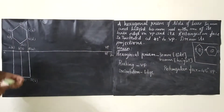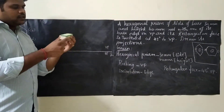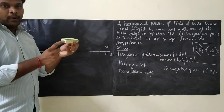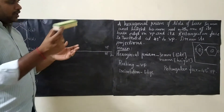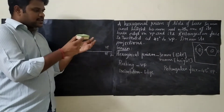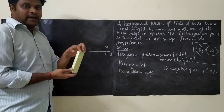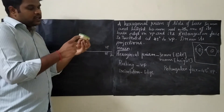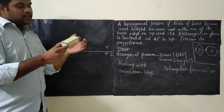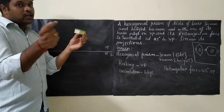This is the hexagonal prism — top face will have alphabets A, B, C, D, E, F and the bottom face will have numerals 1, 2, 3, 4, 5, 6. Hexagon is resting on VP, so this is VP. The top face uses alphabets and the bottom face uses numerals.